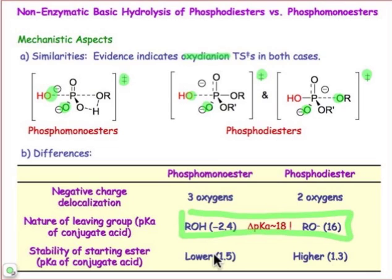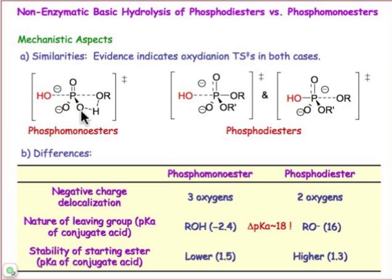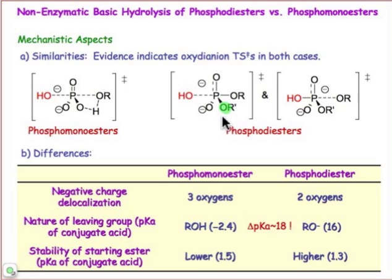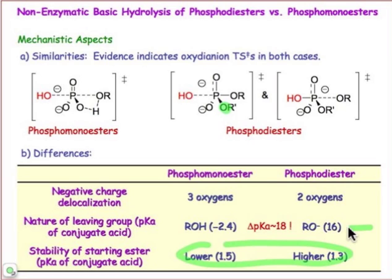These other effects are small. There is delocalization — the negative charge is delocalized over 3 oxygens. In the case of the phosphomonoester, this means that this oxygen picks up some of the negative charge as the proton departs, so the negative charge is spread over those 3 oxygen atoms. In the case of the phosphodiester, that oxygen is essentially tied up with its organic constituent, so it's not going to pick up any negative charge. As far as the pKa difference goes, these are small effects — the big effect is that leaving group effect.